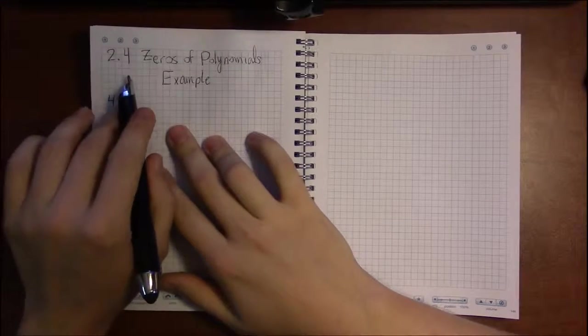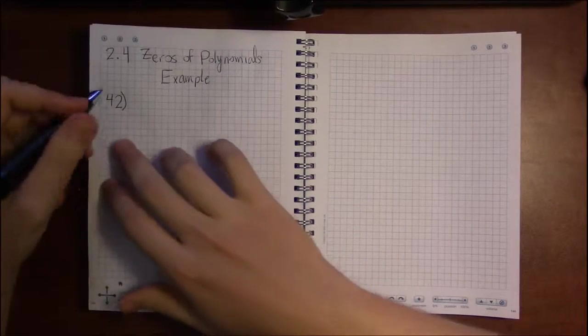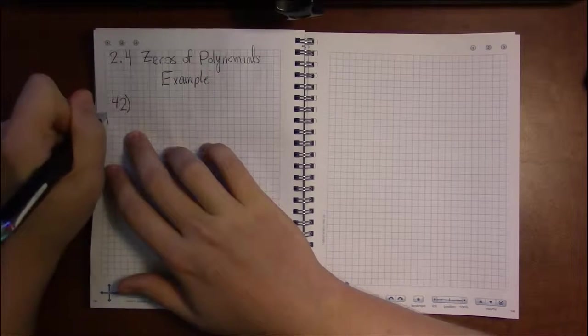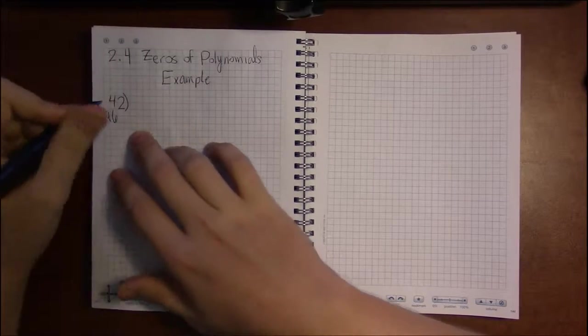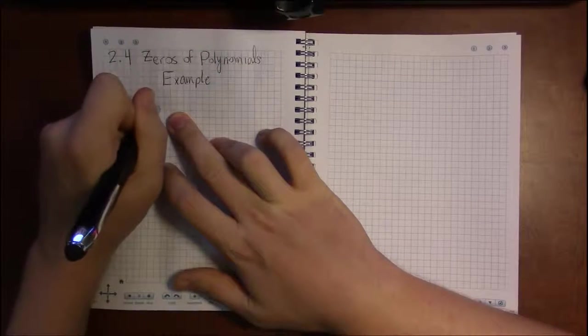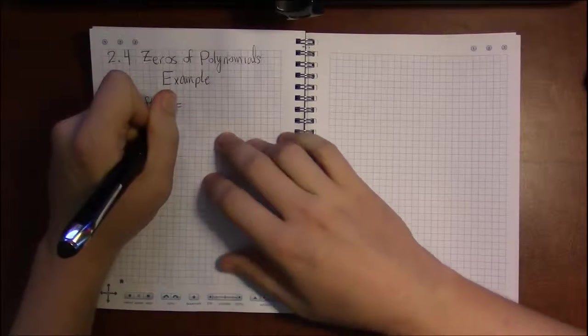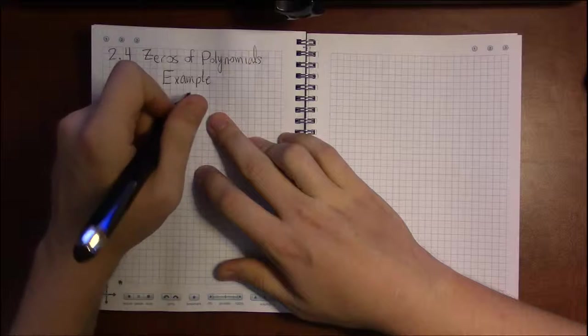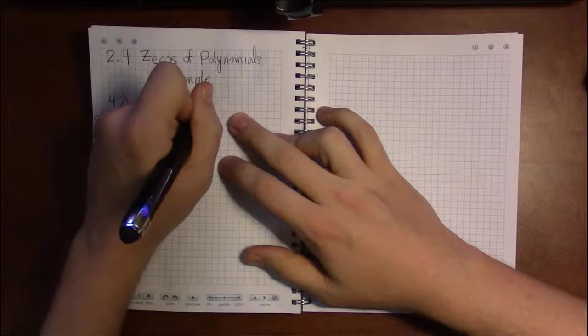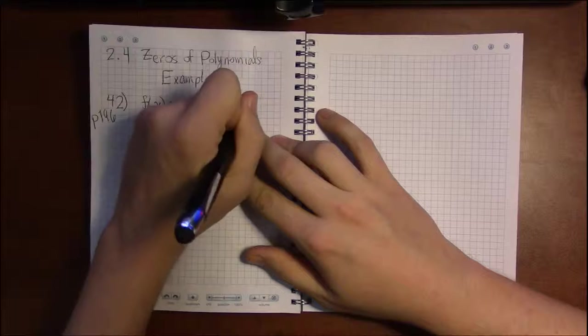Alright, let's start off section 2.4 with some examples. I'm looking at exercise number 42 on page 196. We're asked to find all the zeros of the following polynomial: x cubed minus 5x squared plus 7x plus 13.